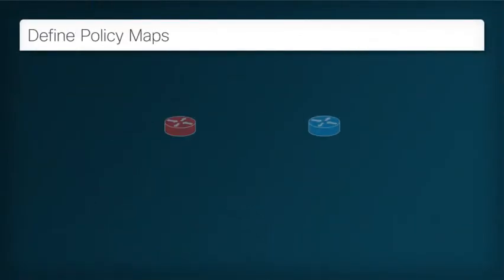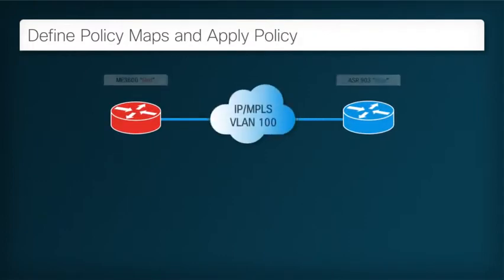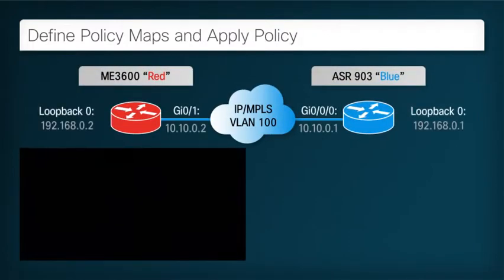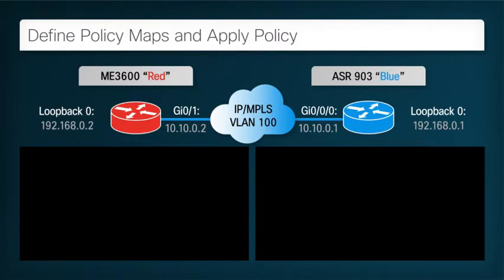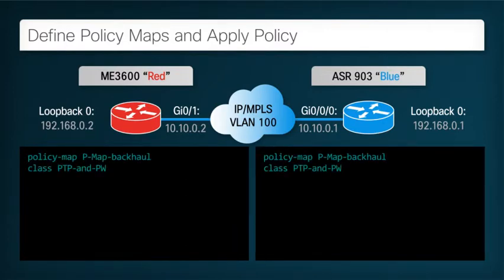Now that we have selected the traffic with our class maps, we define policy maps, which tell the routers how the previously defined classes of traffic are to be treated. Define policy maps and apply policy. To specify QoS actions, we first define a policy map with a chosen name. Then, for each class of traffic to handle, we define which class of traffic to act upon and the action to take. The most important action we must take for our solution is to make sure that the PTP and pseudowire traffic is placed in the low latency priority queue.